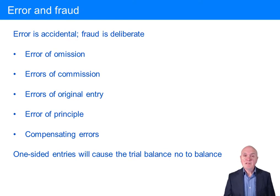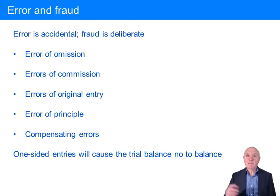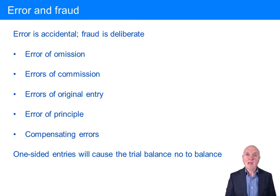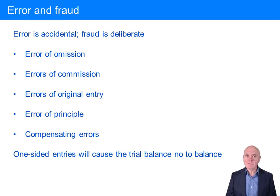An error of commission is where you do something incorrectly — maybe you pay somebody twice for an invoice. The invoice goes around the system, you pay it, haven't cancelled it, it goes around again and you pay it twice. Or you pay an employee twice, or pay their expenses twice. All of those are errors of commission.